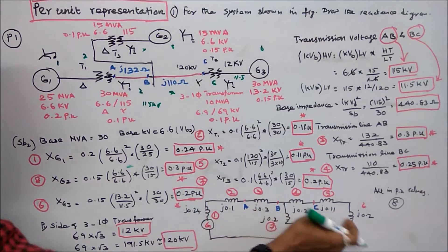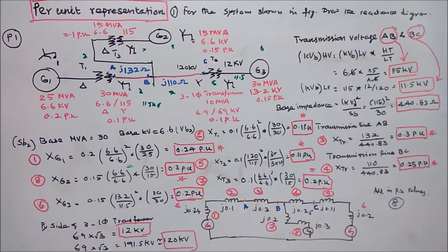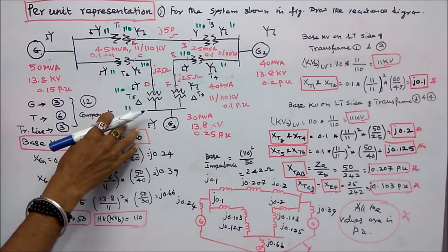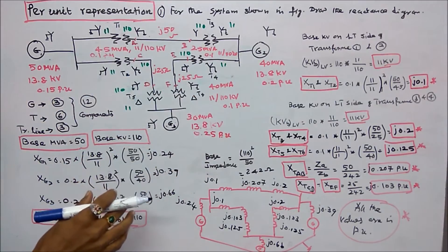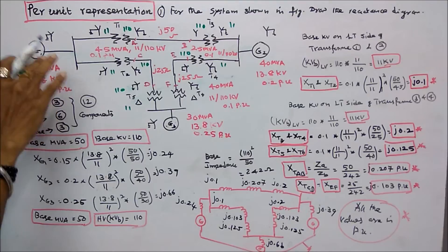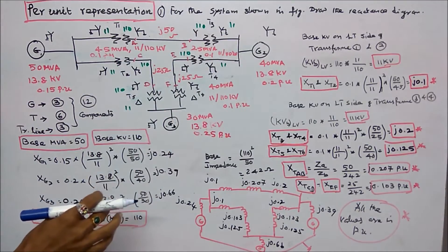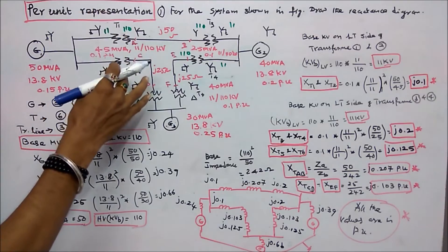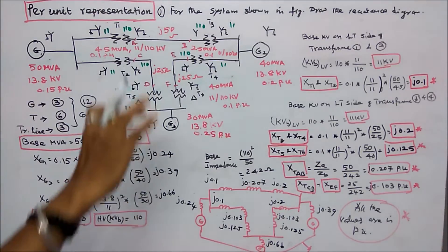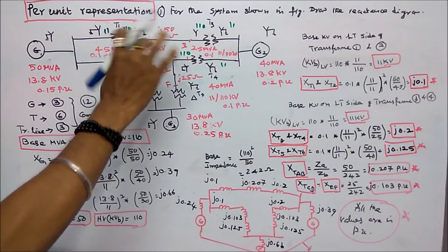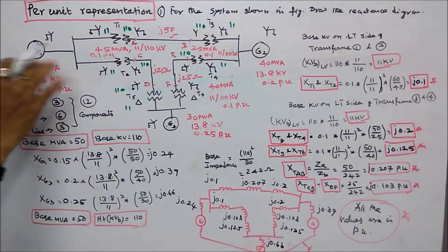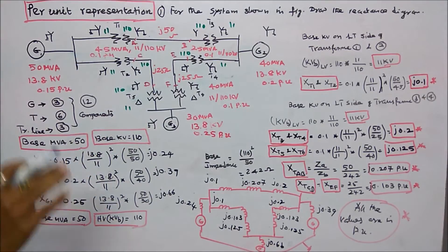Problem number 2: for the system shown in the figure, draw the reactance diagram. The system consists of 12 components — three generators G1, G2, G3; six transformers T1, T2, T3, T4, T5, T6; and three transmission lines AB, CD, EF.